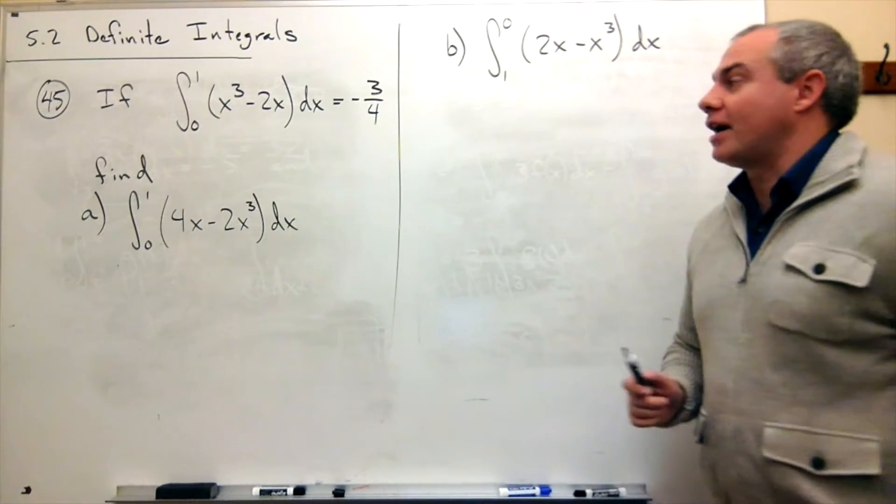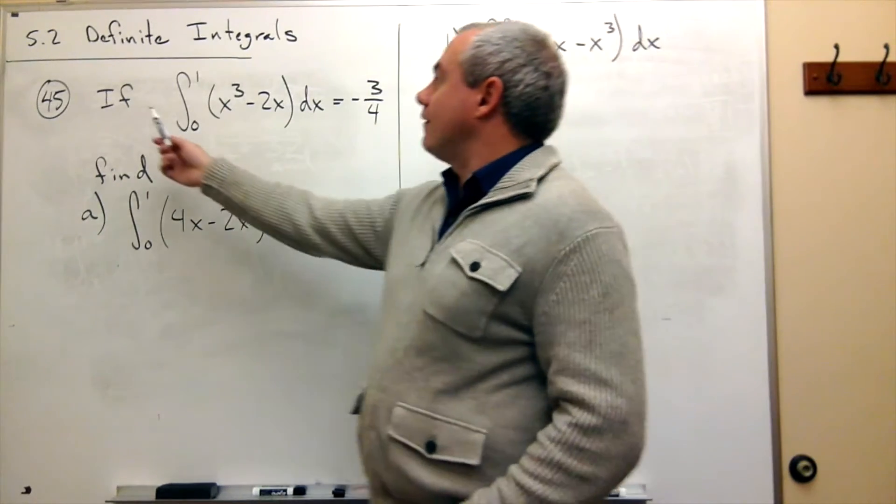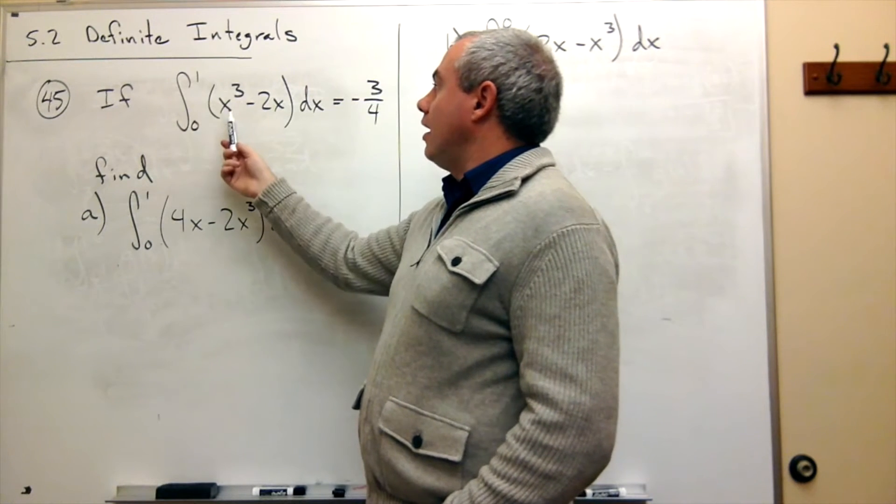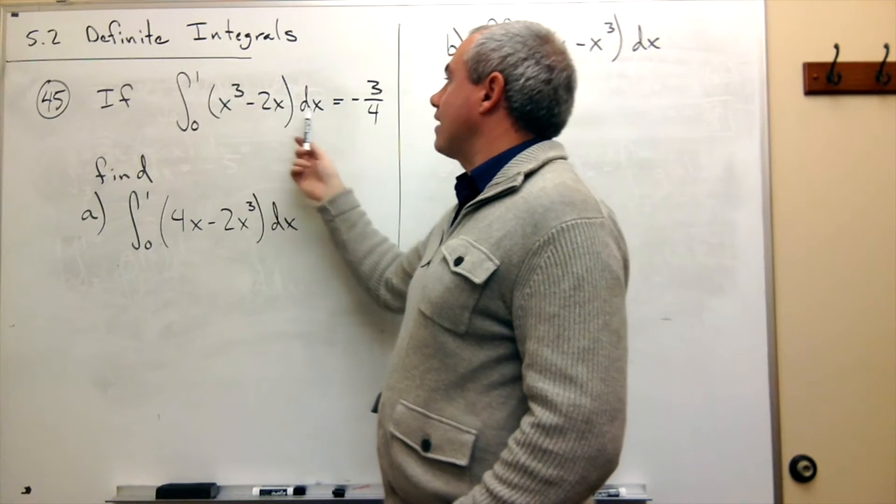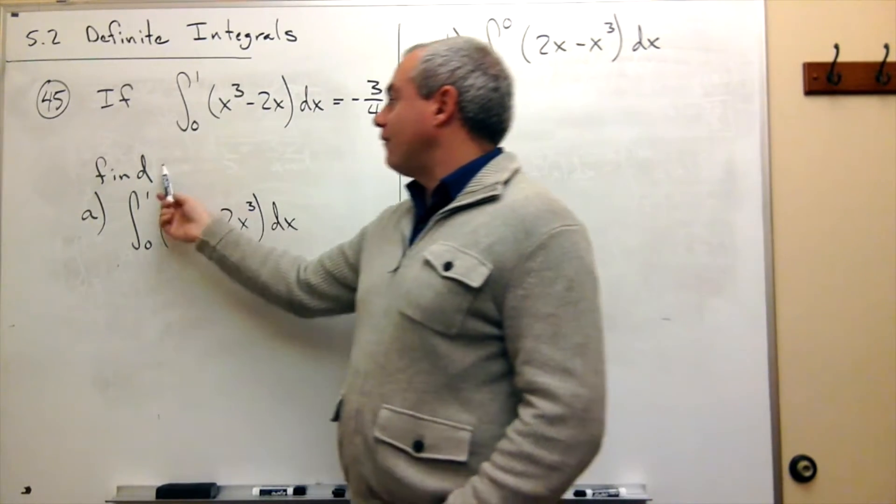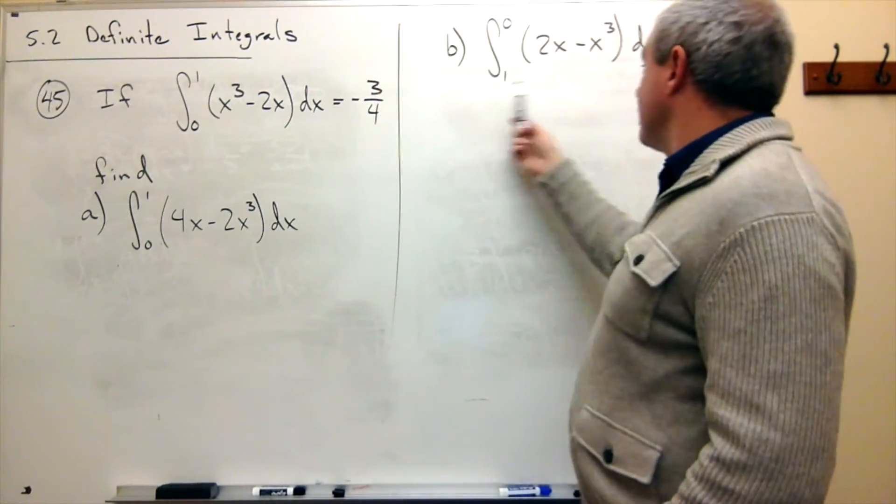In problem number 45, I have if the definite integral from 0 to 1 of x cubed minus 2x dx is negative 3 over 4, then I'd like to find two different definite integrals.